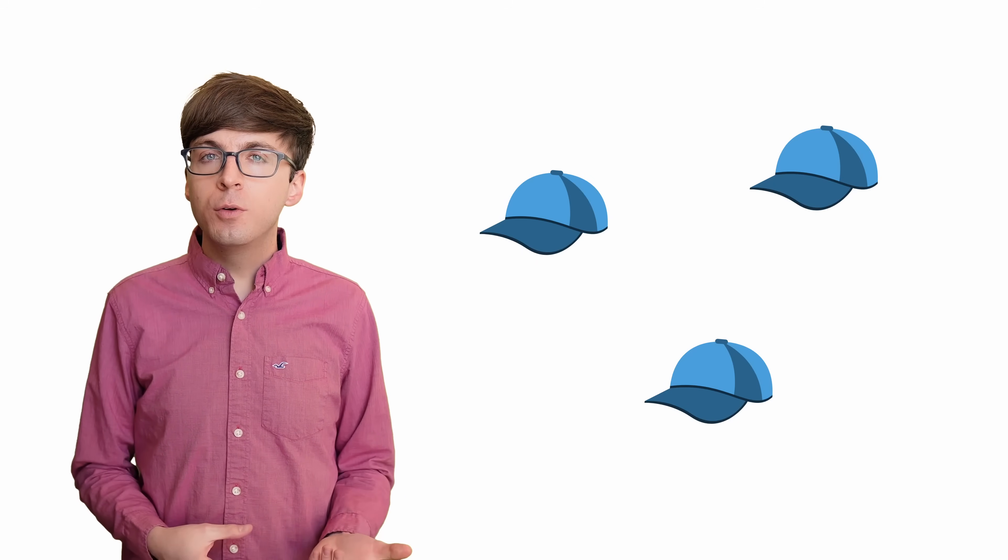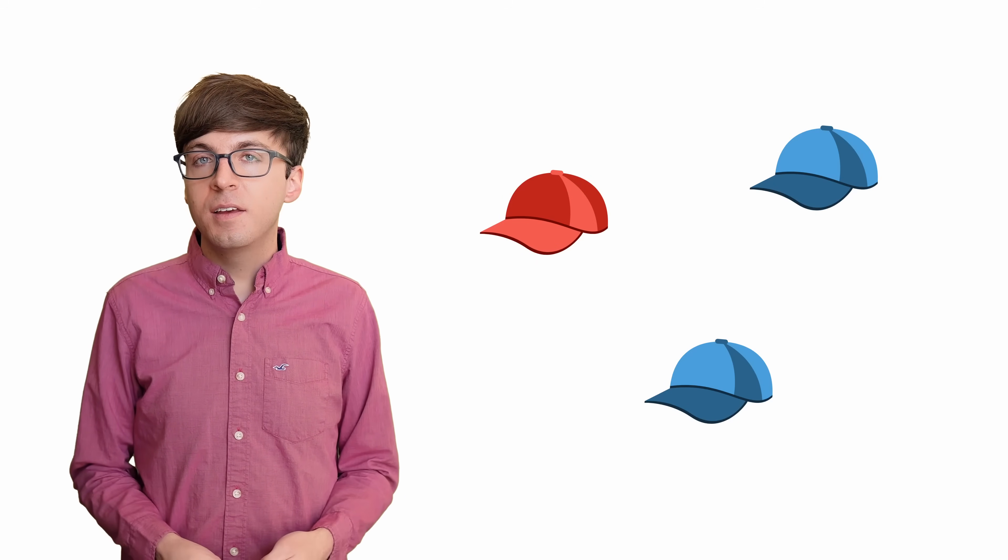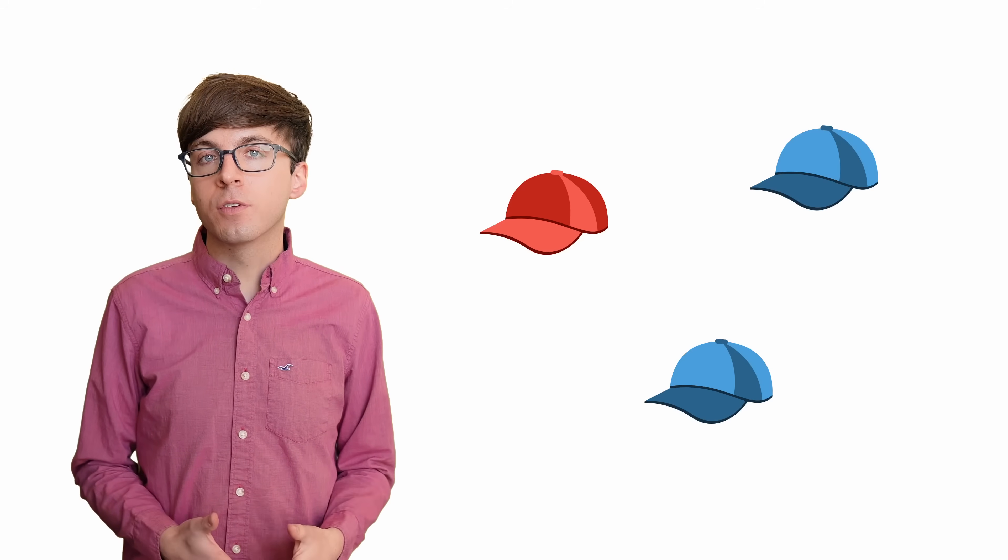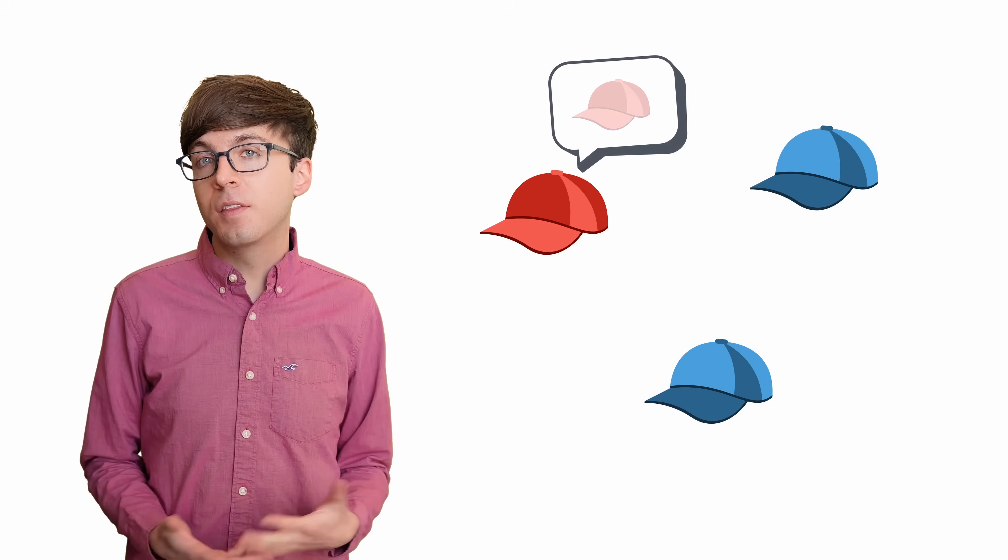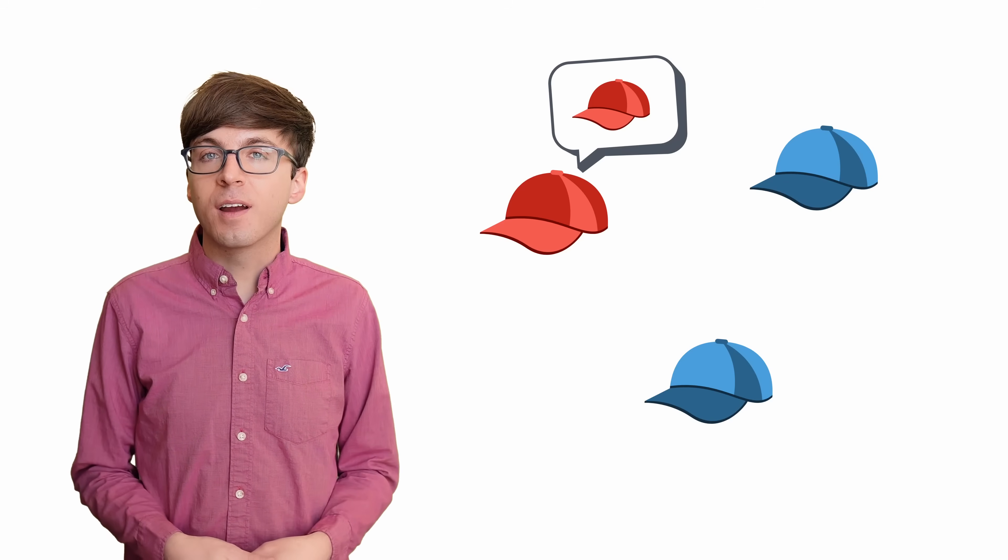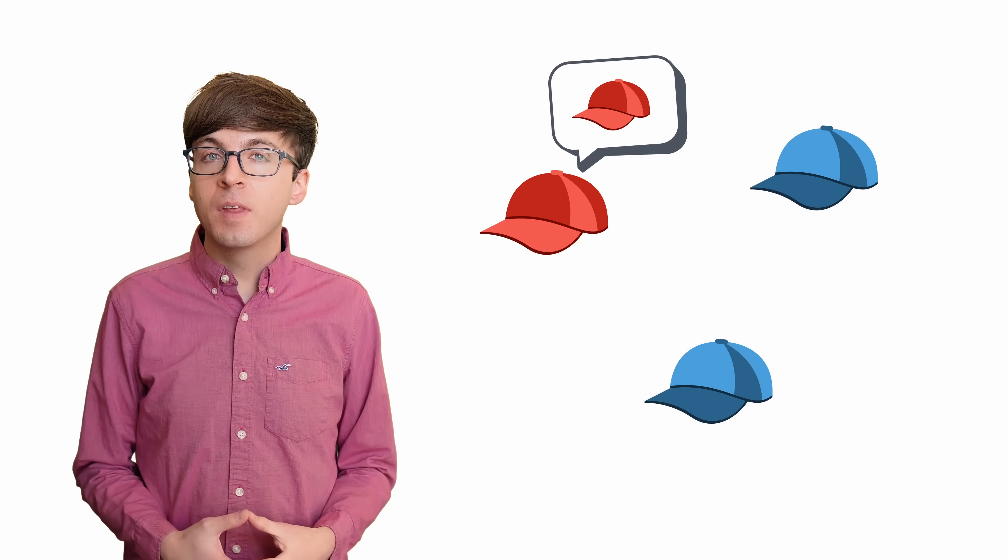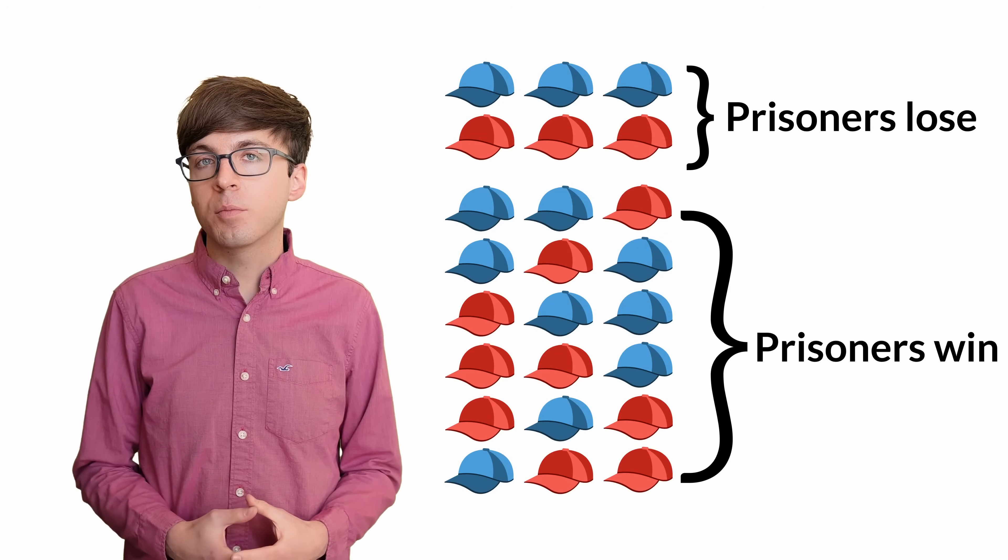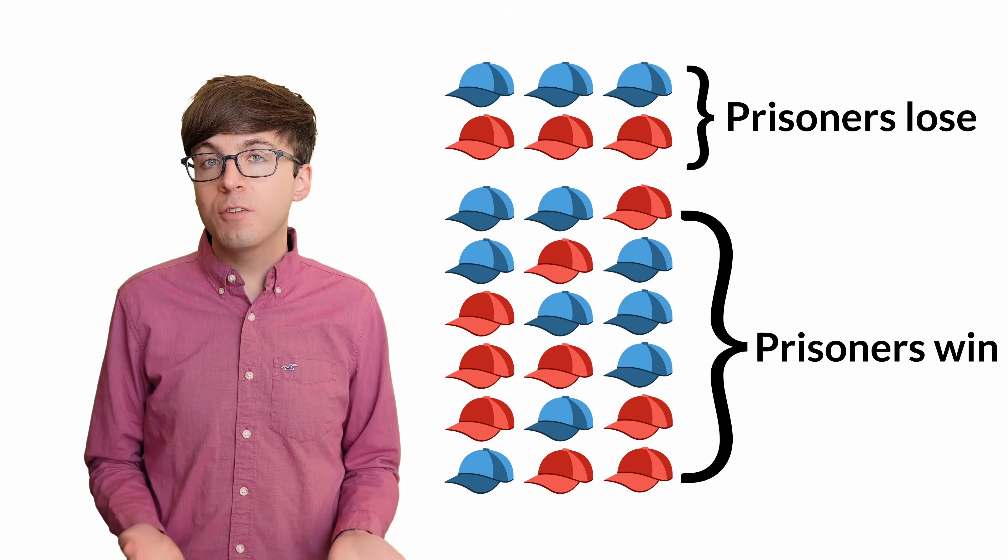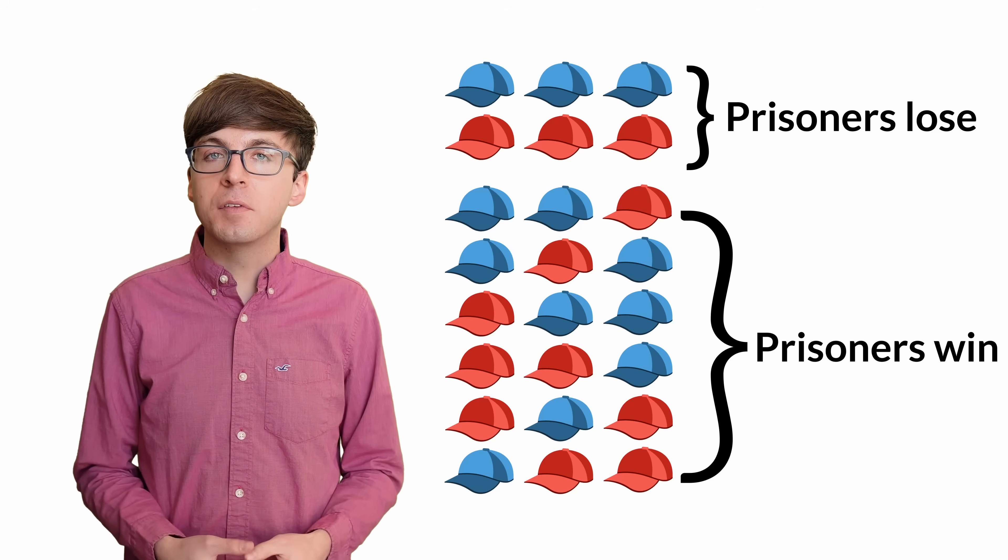But what if there are two blue hats and one red hat? In this case, only one prisoner sees two matching blue hats. This prisoner guesses that they have a red hat, and they are correct. The prisoners win the game, and they will win in the remaining six out of eight cases, or 75% of the time. This strategy does much better than a 50-50 guess.